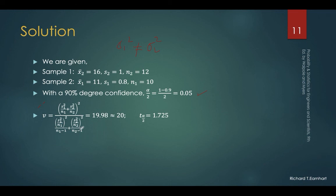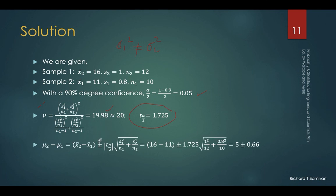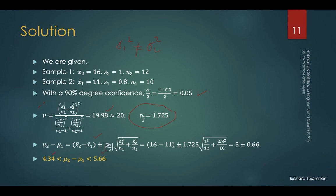In Case 3, we compute the degrees of freedom using the Welch formula with S1, S2, N1, and N2, obtaining 19.98, rounded up to 20. From the T table under alpha over 2 = 0.05 and 20 degrees of freedom, the value is 1.725. Using the Case 3 formula with x2 = 16 and x1 = 11, the t sub alpha over 2, S1, S2, N1, N2 are substituted. We are 90% confident that the difference between the two population means will fall between 4.34 and 5.66.